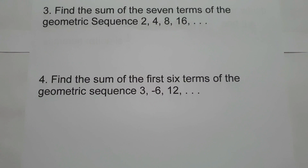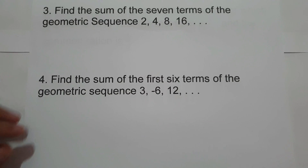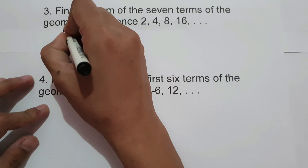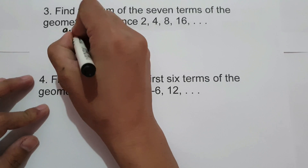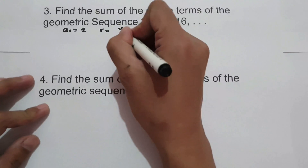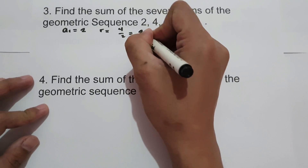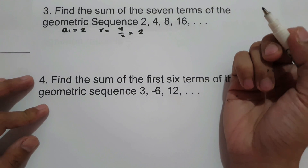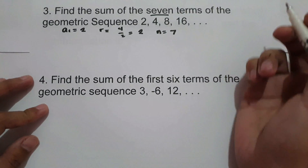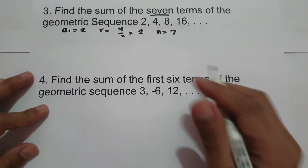Let's have another example. Find the sum of the 7 terms of the geometric sequence 2, 4, 8, and 16. So we identify the given: a sub 1 is 2, r is 4 divided by 2, which is 2, and n is 7. Now let us use the formula.